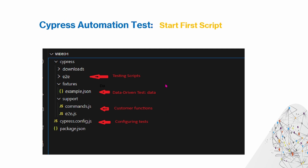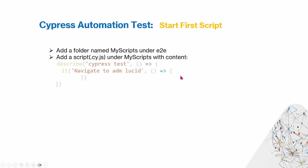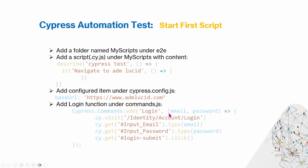What we'll be doing in this video is first adding a folder called 'my scripts' under the e2e folder, then adding our own script to test our own things. Generally these scripts follow a format containing describe and it statements for different tests. We're also going to configure our project by setting the base URL, and within commands.js we're going to add some login functions that allow you to log in and authenticate within a page.